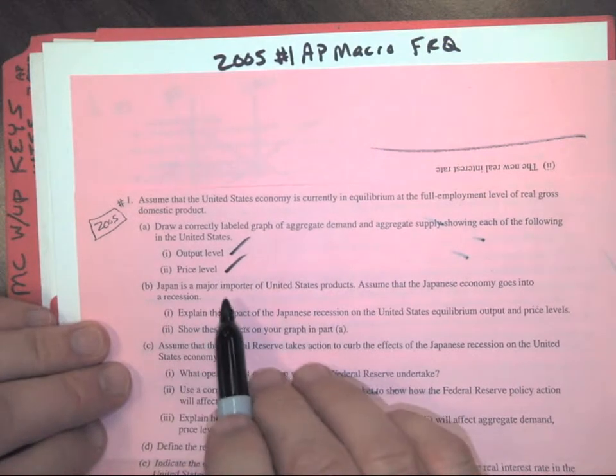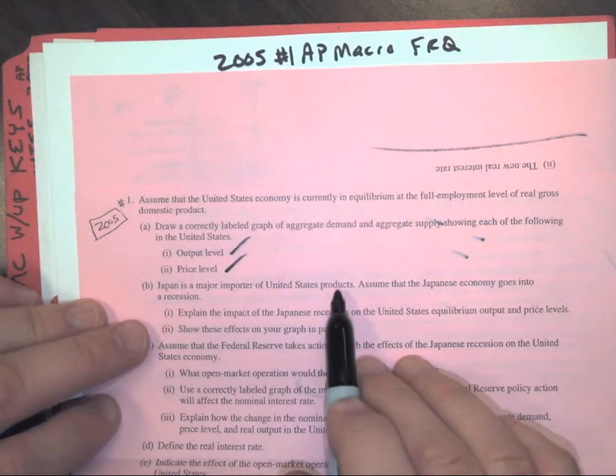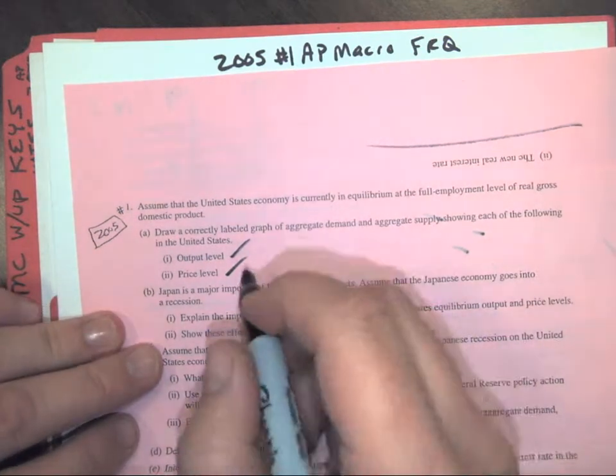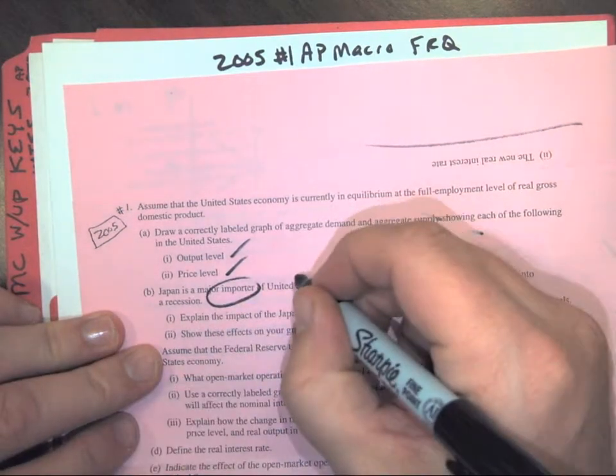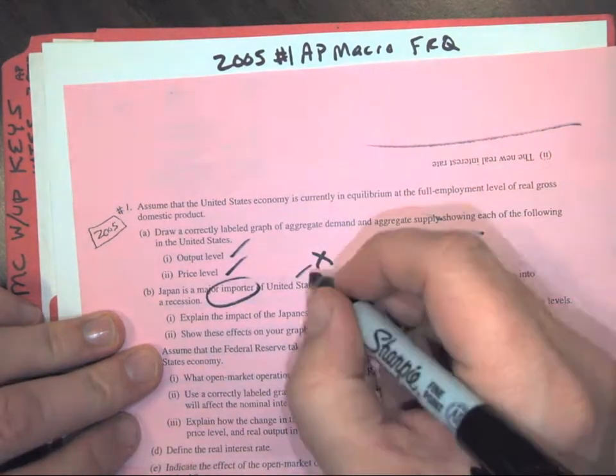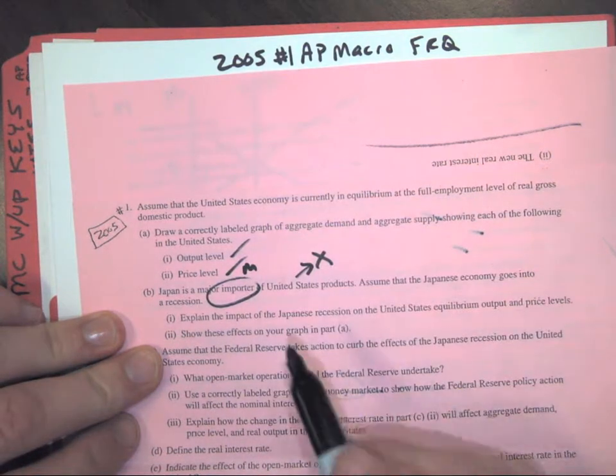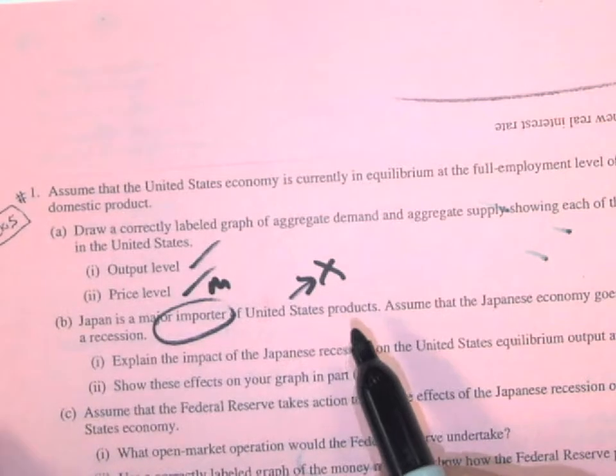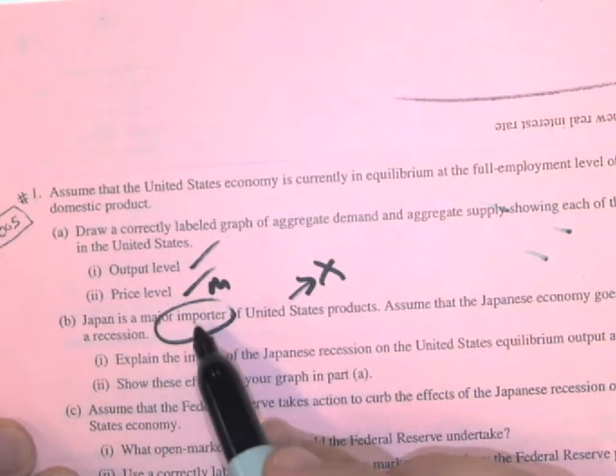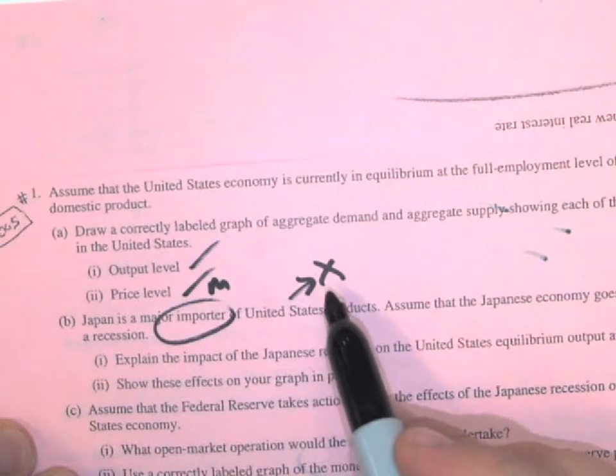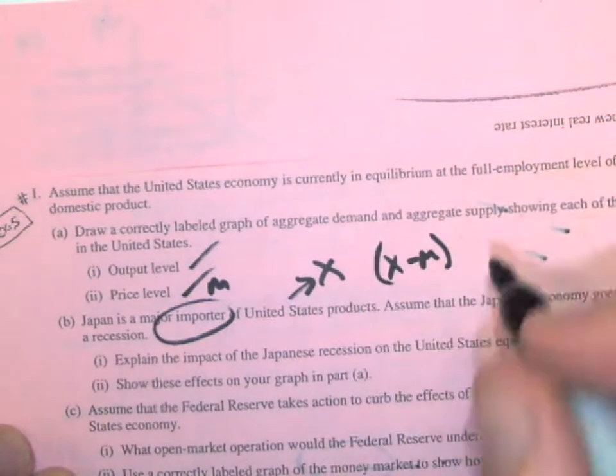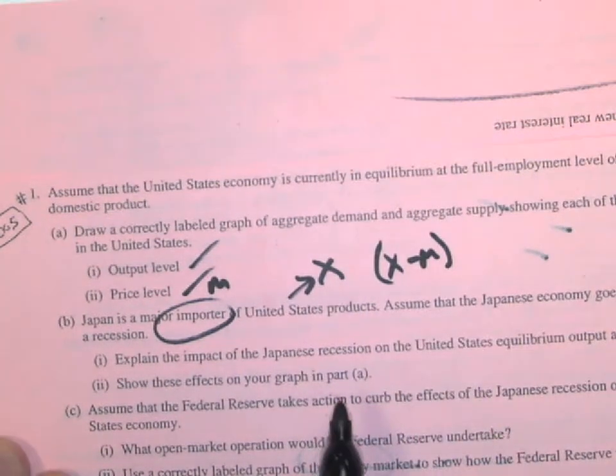So now it says Japan is a major importer of United States products. Assume that the Japanese economy goes into a recession. So if Japan is the importer, the U.S. is the exporter, aren't they? Let me zoom in a little bit. So Japan is an importer of United States products. That means we're the exporters. So immediately start thinking X minus M from SIGX.